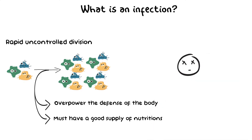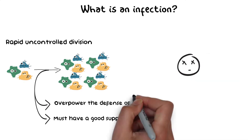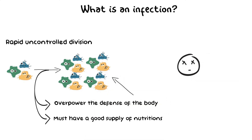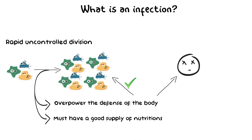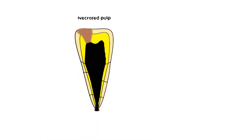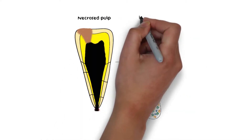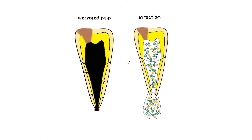If neither of these two factors are available, then the microbes that have attacked will eventually die off. Keeping these things in mind, there are a number of reasons why bacteria can establish an infection in a necrosed pulp.